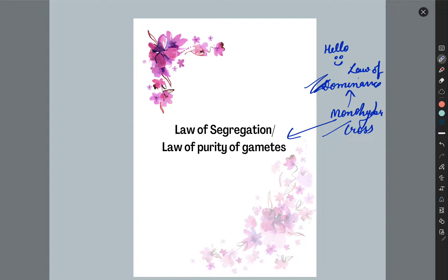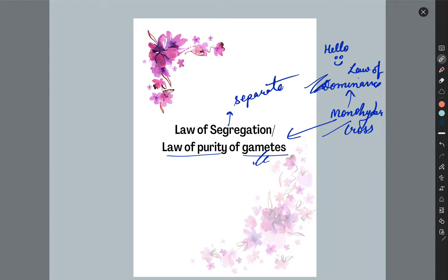What does the law of segregation mean? Segregation means that it is separate. If it is separate, then we call it the law of segregation, or the law of purity of gametes.